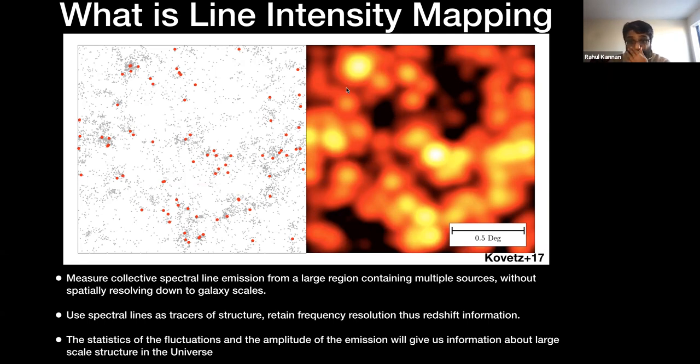Just like the cosmic microwave background, you can look at the fluctuations in this emission — the statistics of fluctuations — to gather some information about the large-scale structure in the universe. And since you're also looking at H-alpha emission lines from the galaxies themselves, you can say something about the galaxies, not just the large-scale structure. So you can basically constrain both astrophysics and cosmology using this line intensity mapping technique.